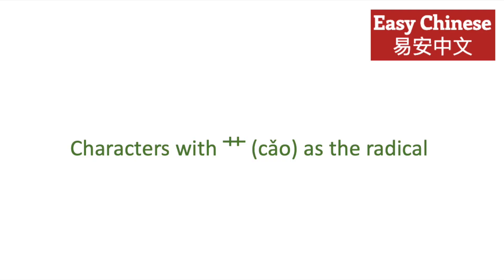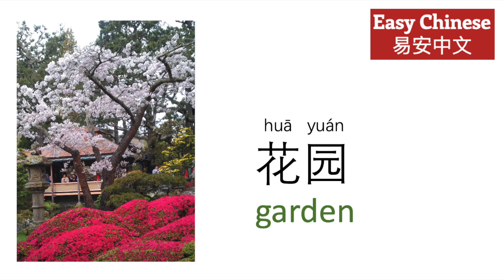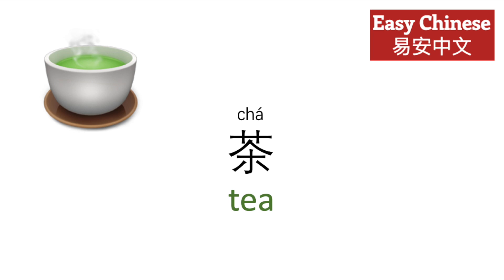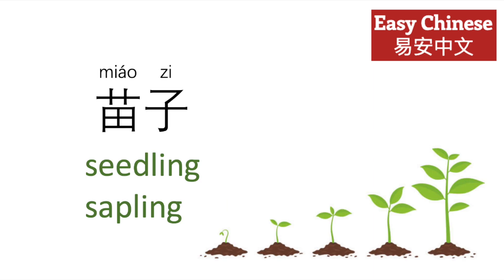Characters with Cao as the radical include Hua, flower. And so you have Hua Yuan, garden. Cha, tea. It's in Ping from Ping Guo, apple. Miao Zi, seedling or sapling.